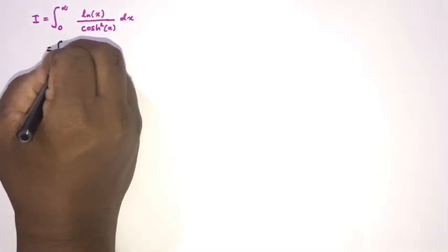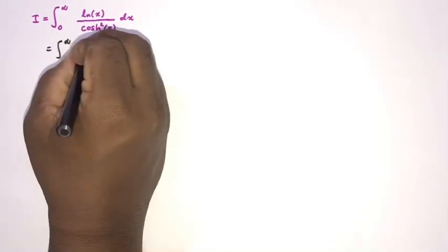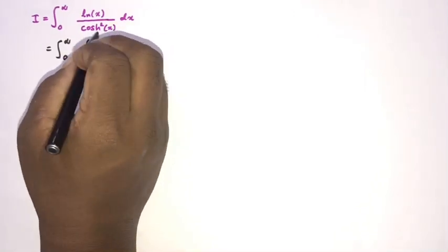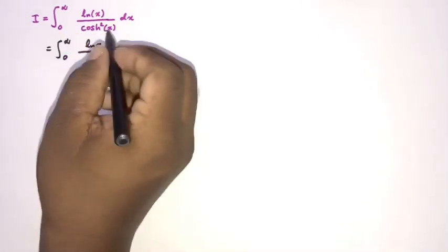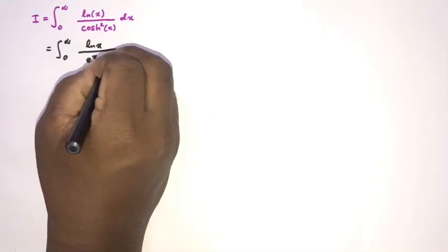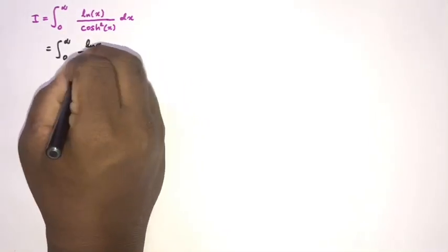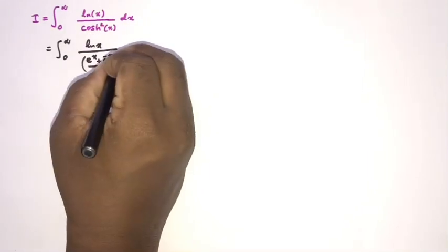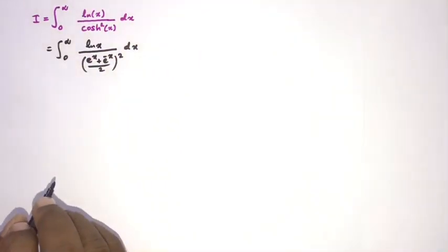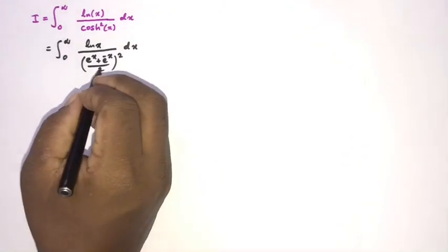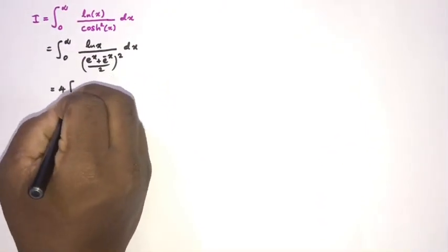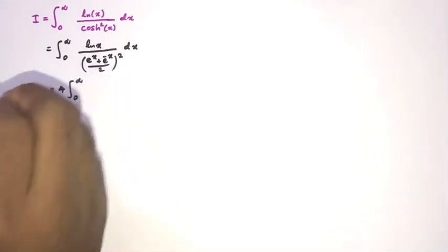We start by writing the denominator using the hyperbolic cosine: cosh(x) = (eˣ + e⁻ˣ)/2. Because it appears squared, we get a factor of 4 in the denominator, which moves to the front as 4 times the integral from zero to infinity.